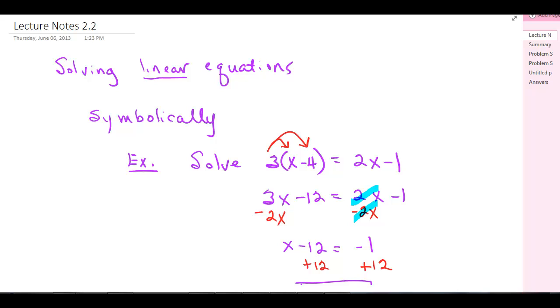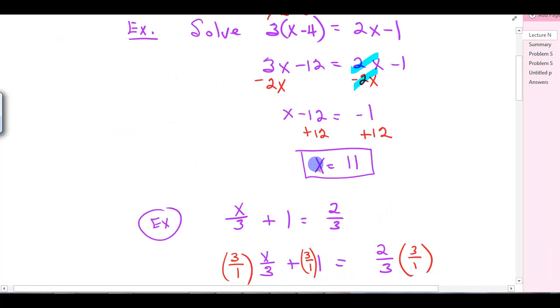Symbolically is the first way, and that's probably the most common way that you would think to do it. Solve it algebraically, what you're used to doing. For example, if you were asked to solve 3 times x minus 4 equals 2x minus 1, you would distribute the 3, giving you 3x minus 12. Then subtract 2x to get x minus 12 equals negative 1. Add 12 to both sides, and you'd have x equals 11. That's solving it symbolically.